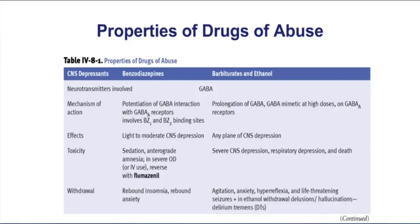Their toxicity can manifest as respiratory depression. Flumazenil is a very important antidote for benzodiazepines, but not for barbiturates or ethanol, because this drug cannot reverse the actions of those drugs which have a separate binding site.